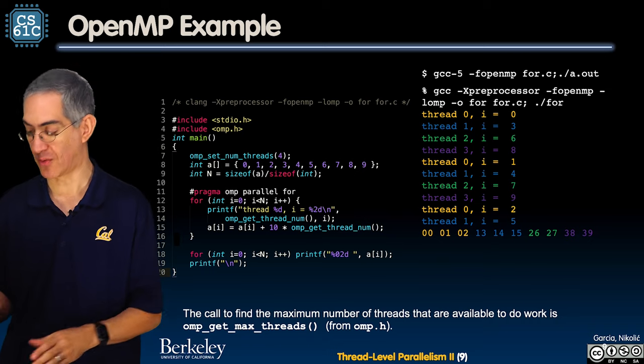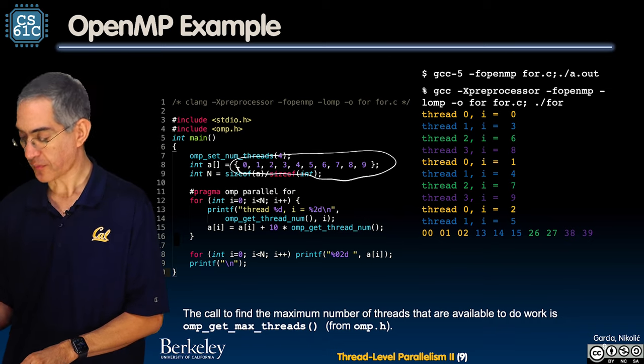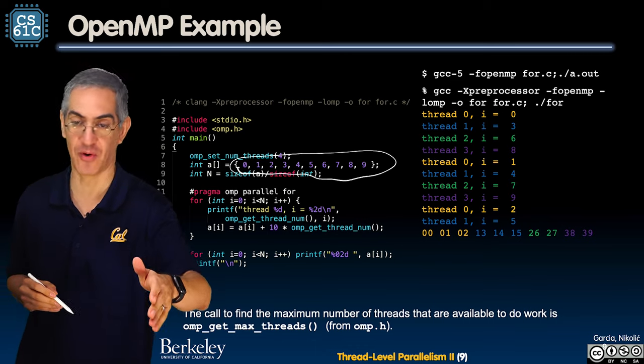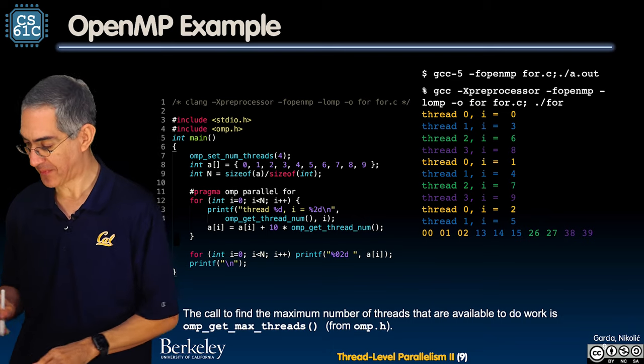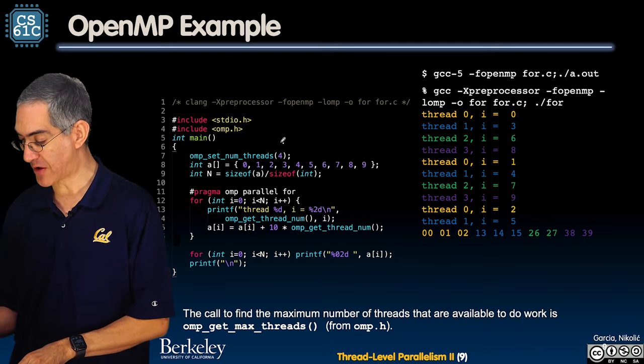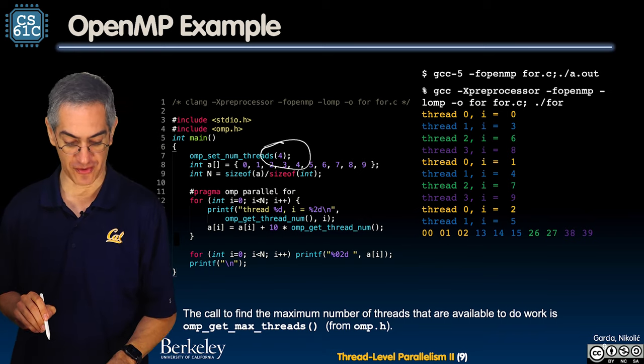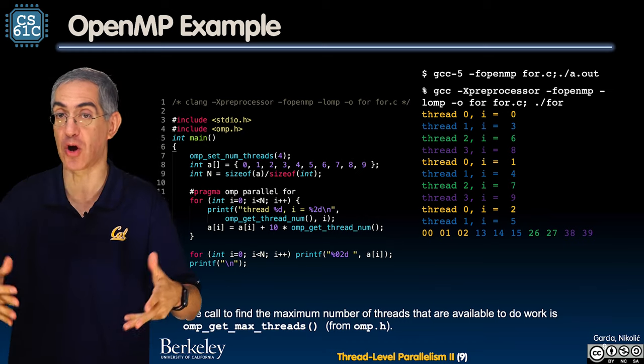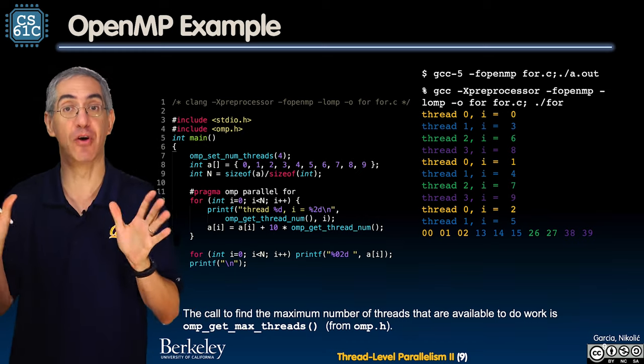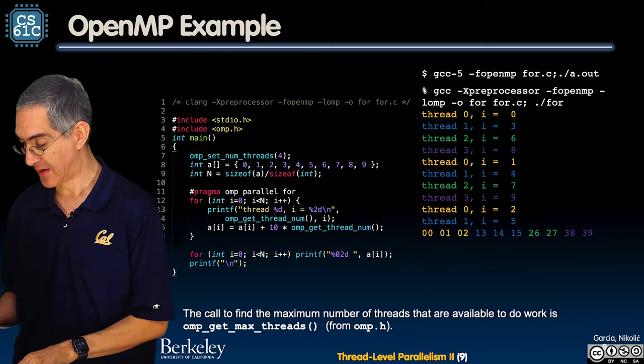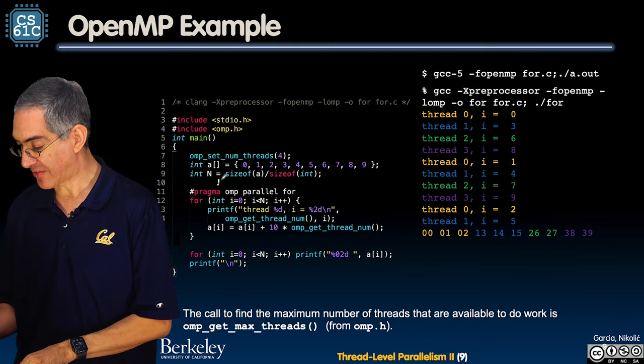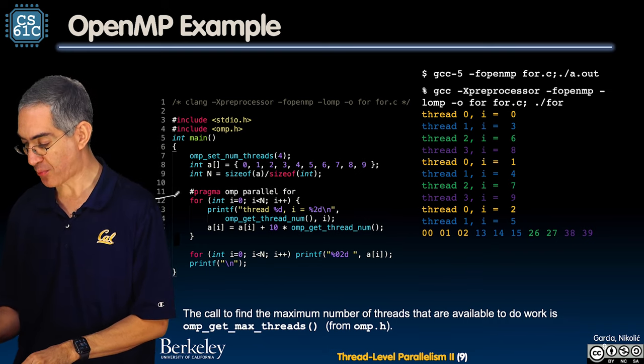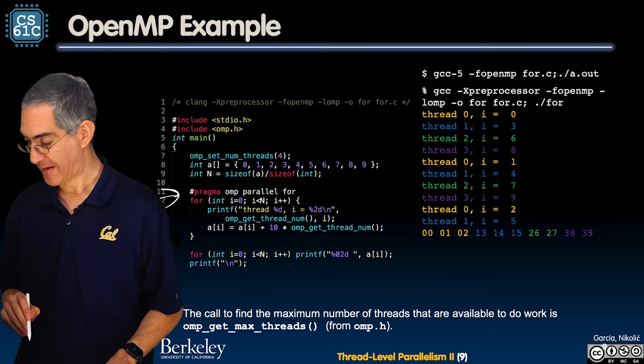What is this code doing? This code has an array of ten elements whose value is the same as the index. I'm gonna tell OpenMP that I want to use four different software threads. This says n is going to be size of a over size of int, essentially that's just ten.